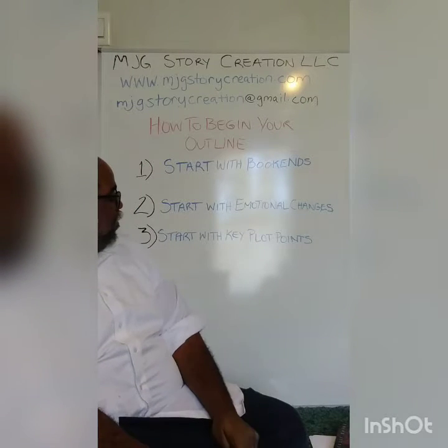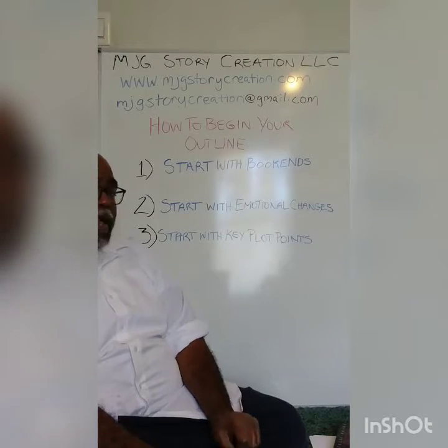The final thing you could start with would be key plot points. Whereas when you're looking at emotional changes you're looking at the life of the character on the inside, key plot points focus on the action of the story. If you know where the inciting incident is, or how the story ends, or where the confrontation happens between the protagonist and antagonist, those are all great places to write down — you can work in between and kind of work backward to really figure it out.